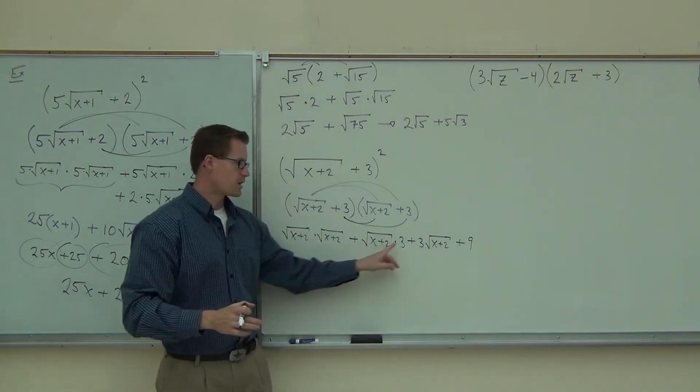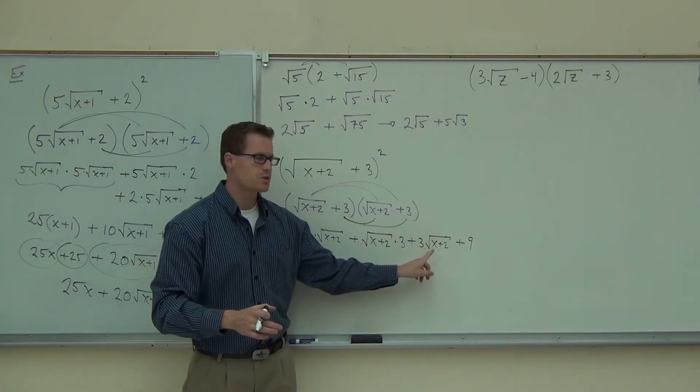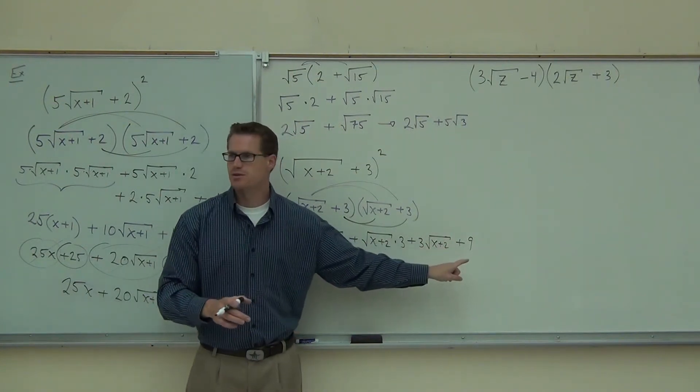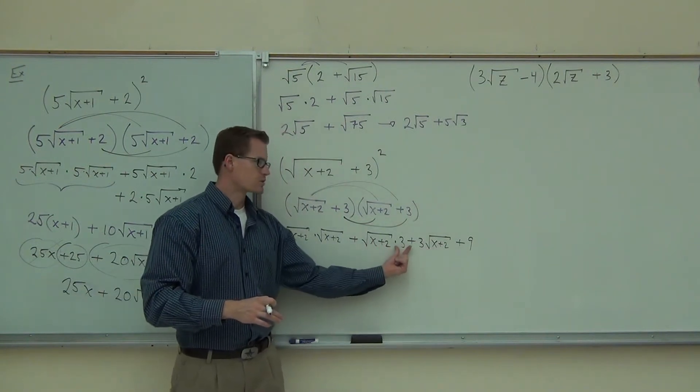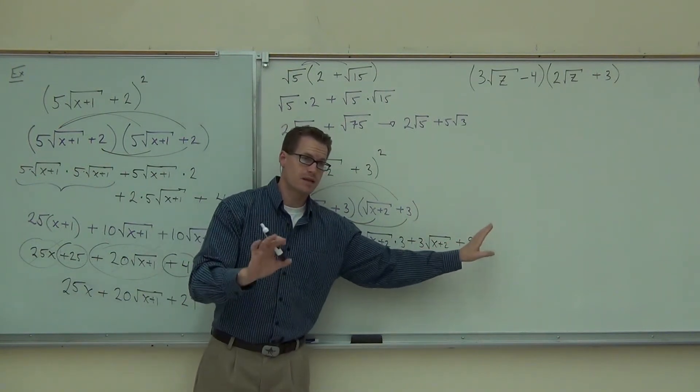So for instance, on this example, when I'm looking at 3 times the square root x plus 2, I can't distribute that. There's no way. Because this has a radical and this one doesn't. This has a radical, this one doesn't. That's a number. That's correct. That's done.